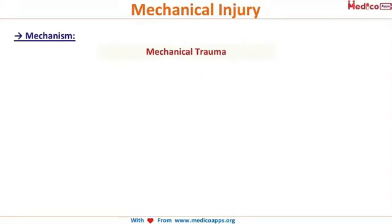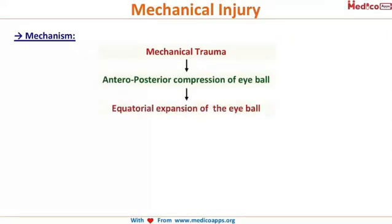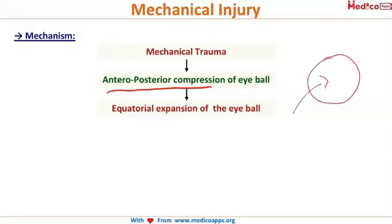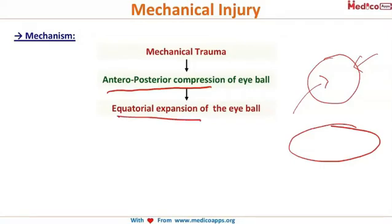The main mechanism of mechanical trauma is: when you hit the eyeball from the front, that is antero-posterior compression, there will be an equatorial expansion of the eyeball. To make it simple — take a rubber ball and compress it between your two palms vertically from front and back. You'll see that along its diameter, horizontally, it will expand. This equatorial expansion is the main mechanism of mechanical injury.